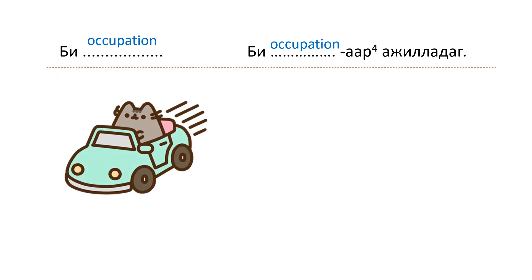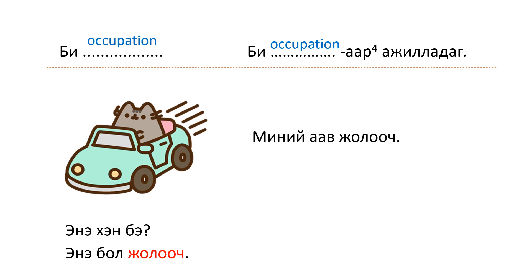Another example: 'minii aav jolgchijn' — 'my father is a driver.' And 'jolgchijn aar ajildag' — 'he works as a driver.' Now I think you understand this sentence pattern, so let's learn some more occupation words.